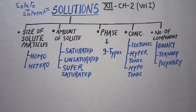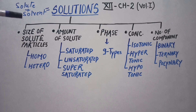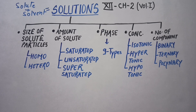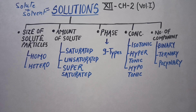Now I am going to classify solutions. We can classify the solution into 5 major categories: first is size of solute particle, second is amount of solute particles, third is phase dependent, fourth is concentration dependent, and fifth is number of component dependent. I would like to start with size of solute particles, which can be classified into two categories.